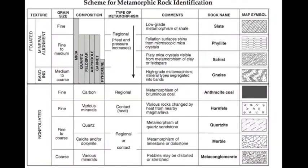Another rock type is metamorphic rock. This graph is used to identify the different kinds of metamorphic rocks by texture, such as foliated, which means that the rock has banding or mineral alignment, or unfoliated. It identifies the grain size, composition, type of metamorphism, comments, and rock name.